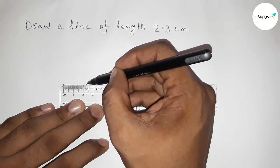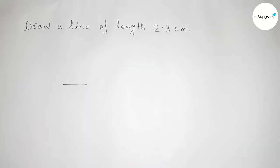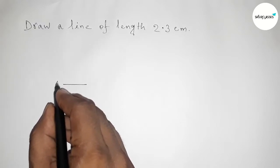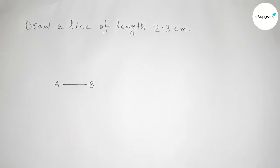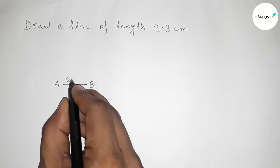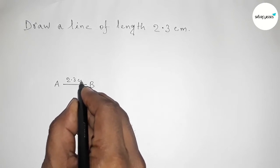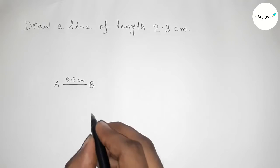Next, joining this line and taking two points on both sides. So taking point here A and here B. So the line AB is a line of length two point three centimeters.